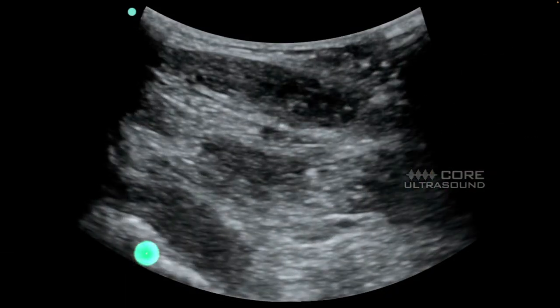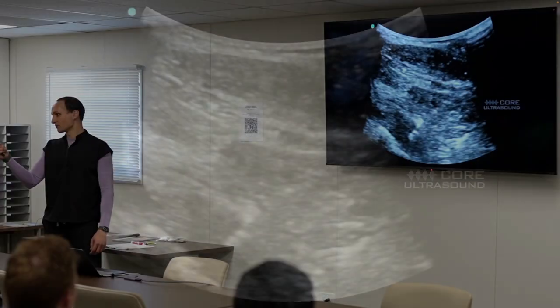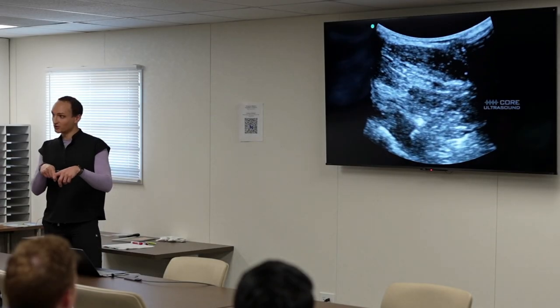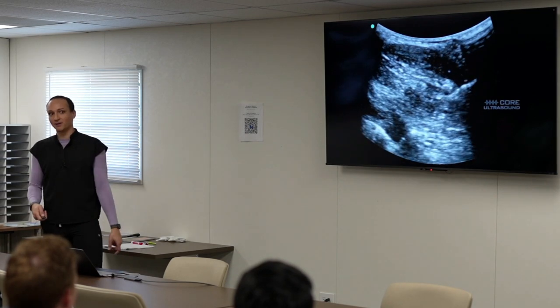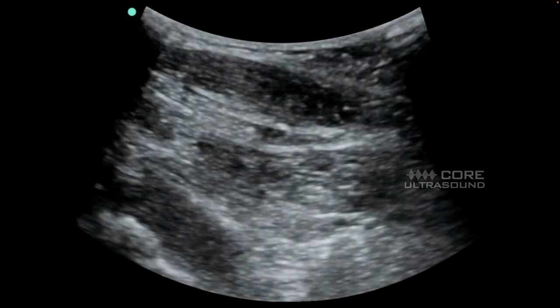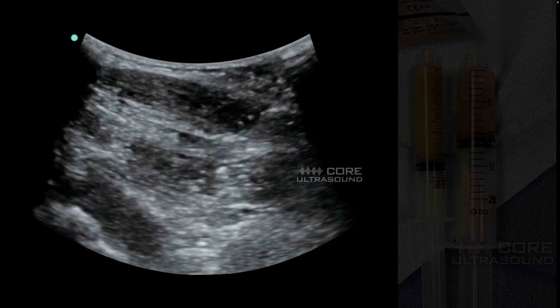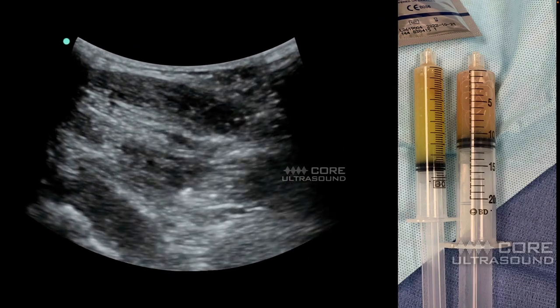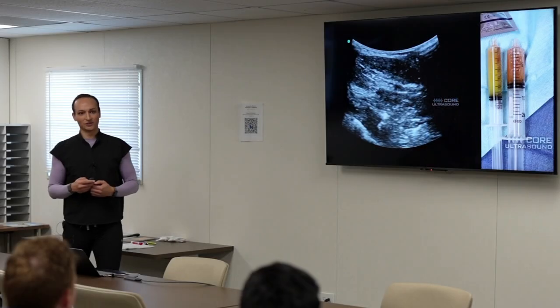Here's an example of a hip arthrocentesis. There's an effusion visible, and the needle is coming in. I don't have perfect needle visualization on this one, but I can see parts of it and I can see the tip is in the right position. Do you want to see what the aspirate looked like? This was an IV drug user — it was gross. They got admitted.